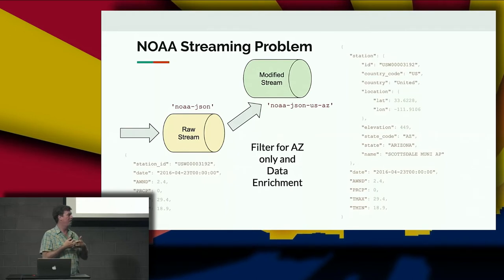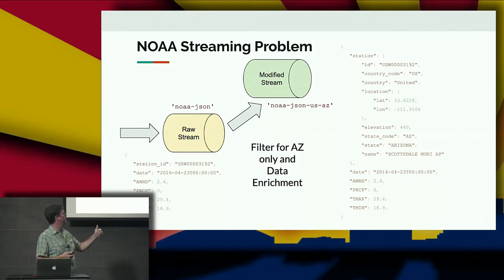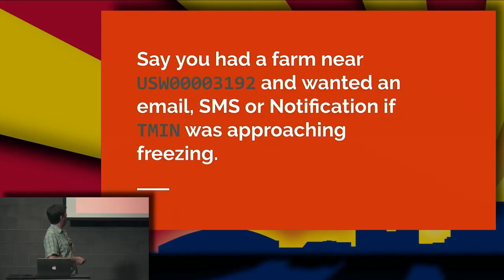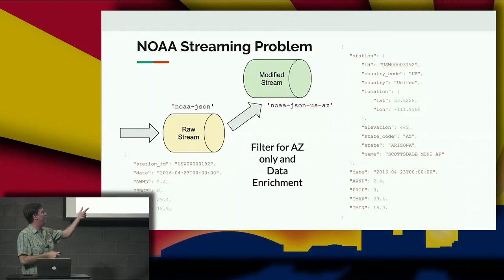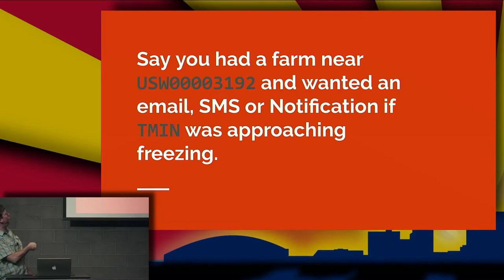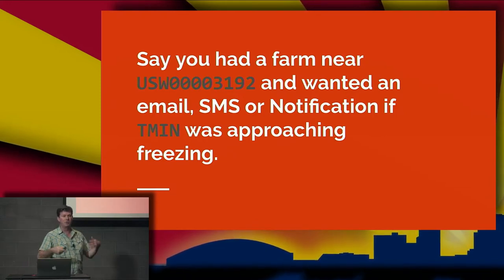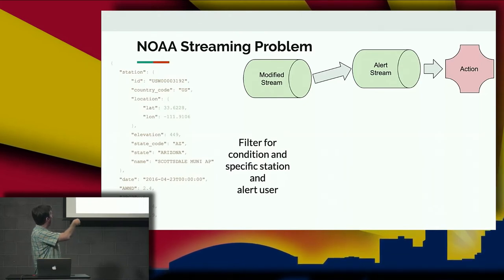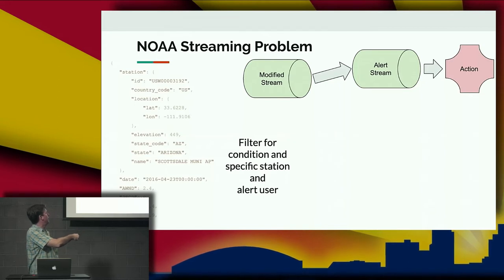That's our first job: take the raw stream and produce a filtered and enriched modified stream. Now say you had a farm near station USW003192 and wanted an email, SMS, or notification if Tmin was approaching freezing — a sensible, likely thing you'd want to do. So we write some filter code that watches for a condition at a specific station and alerts a user.